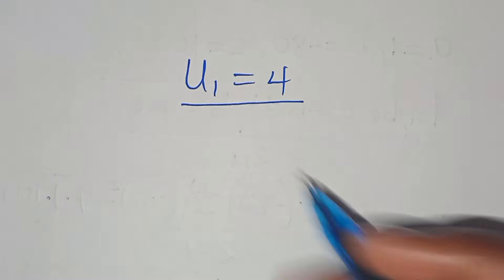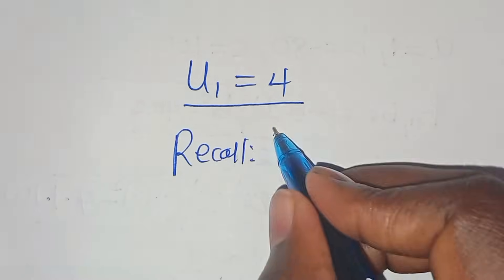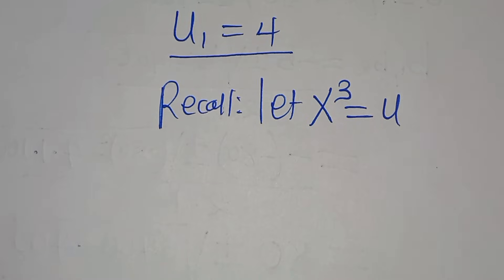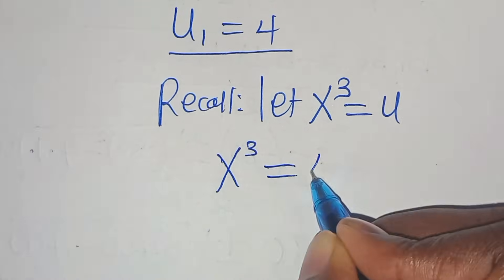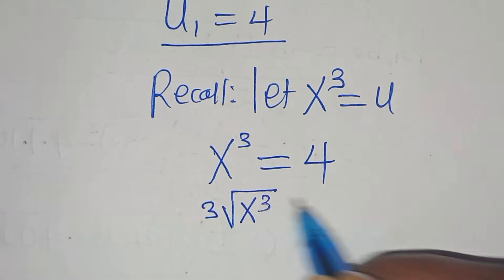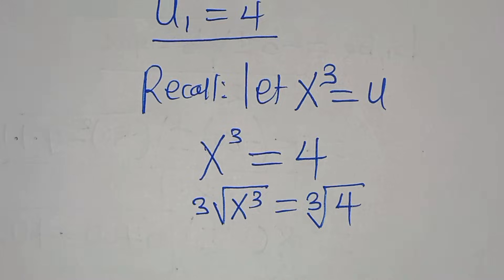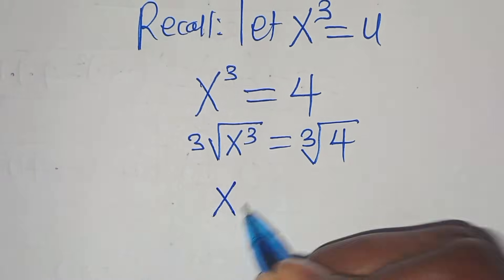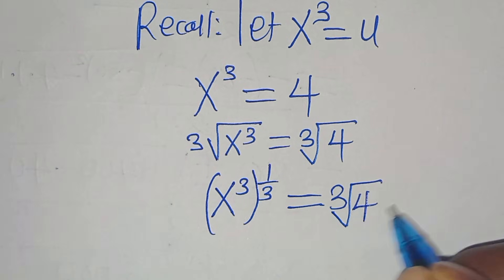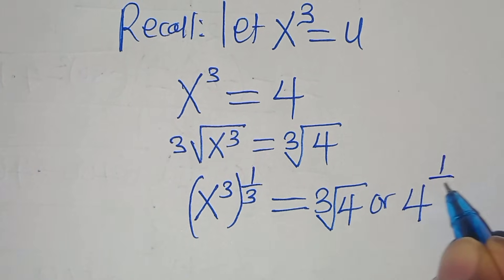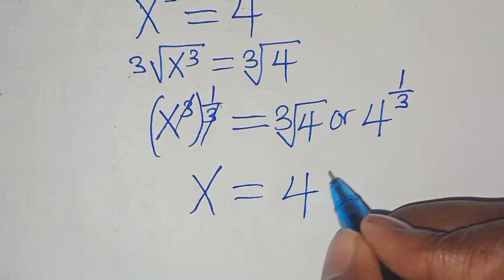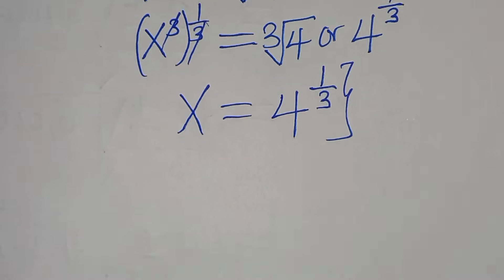Since u₁ = 4 and we assigned u = x³, we have x³ = 4. To solve for x, we take the cube root on both sides: x³ raised to the power of 1/3 equals 4 to the power of 1/3. Therefore the value of x is 4 to the power of 1/3.